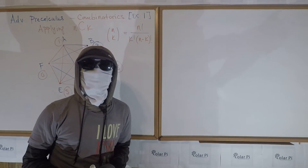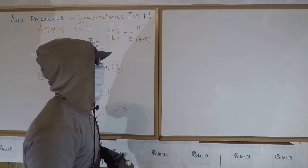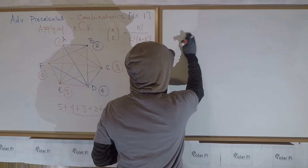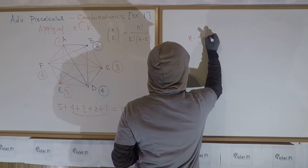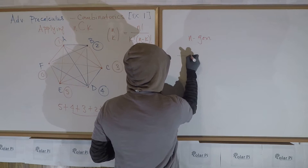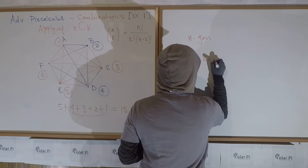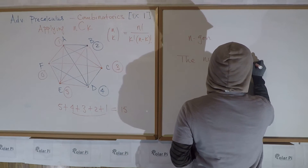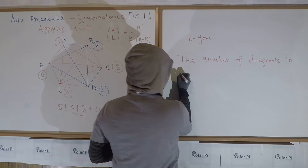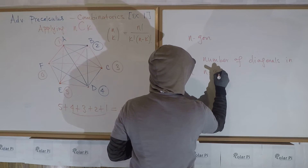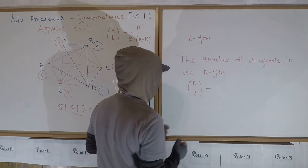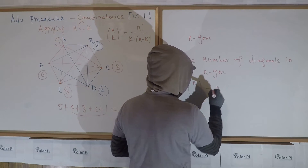A twelve-sided polygon is called a dodecagon, but after twelve, we don't have names for them — we call them thirteen-gon, fourteen-gon, and so on. So in general, we have the name n-gon. An n-gon is an n-sided polygon. So if you have an n-gon, the number of diagonals in an n-gon is n choose two, then minus the number of sides, which is n.